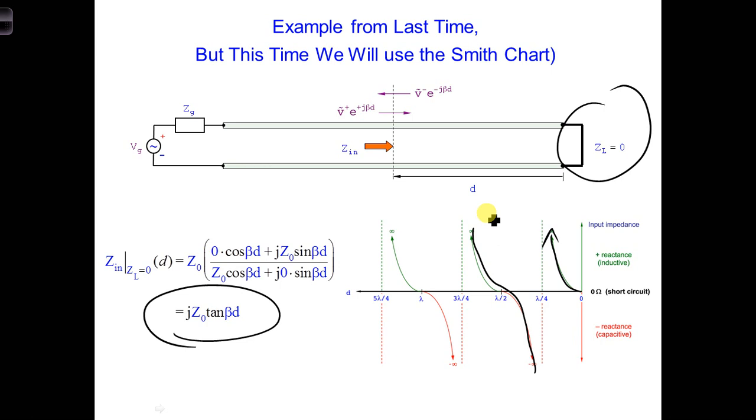For step one, we normalize the load impedance. The load impedance is capital ZL. Capital ZL is zero. So what is the normalized load impedance?